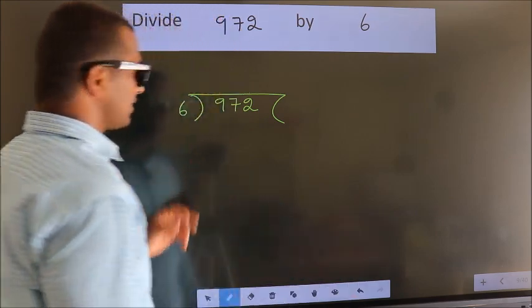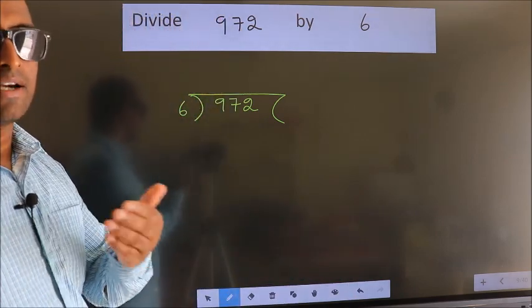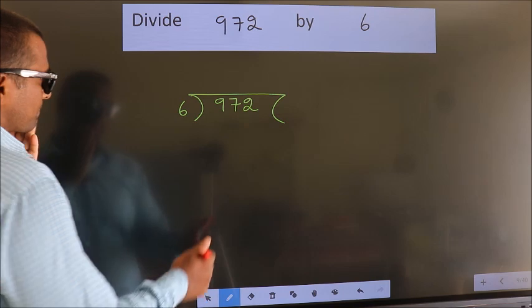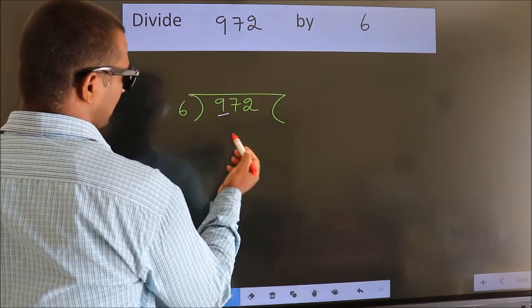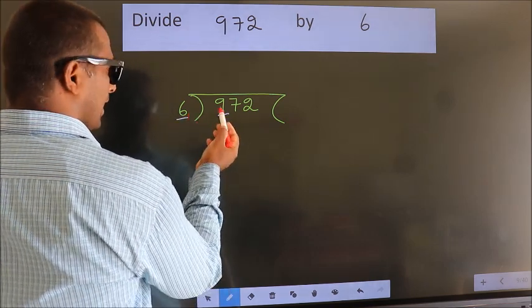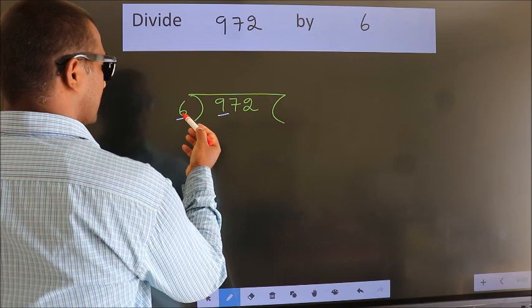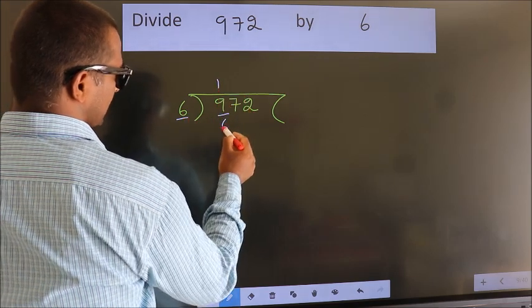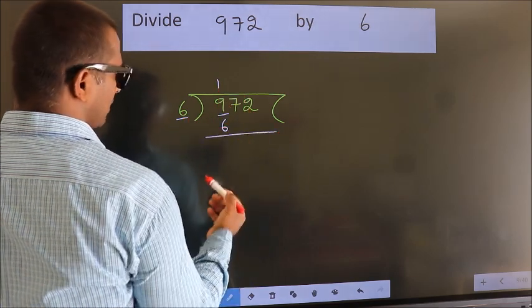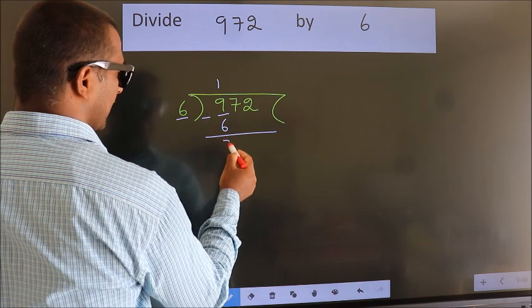This is your step 1. Next, here we have 9, here 6. A number close to 9 in the 6 table is 6 once 6. Now we should subtract. We get 3.